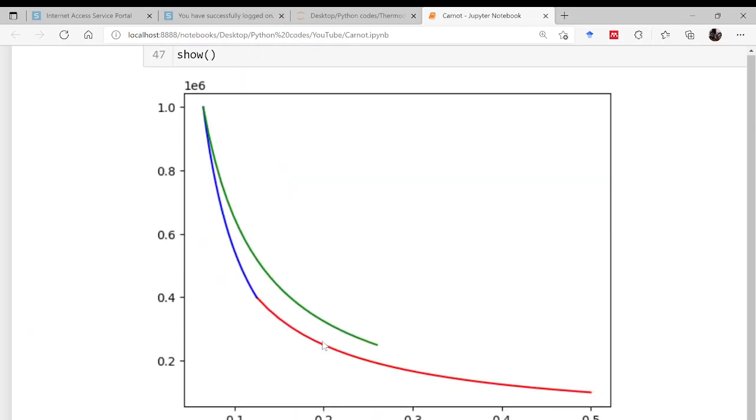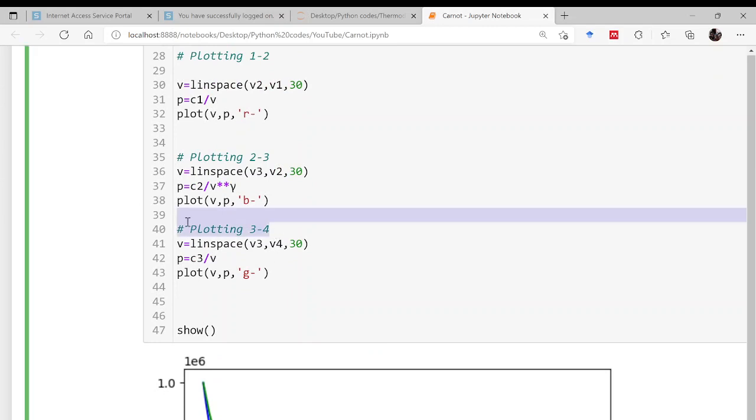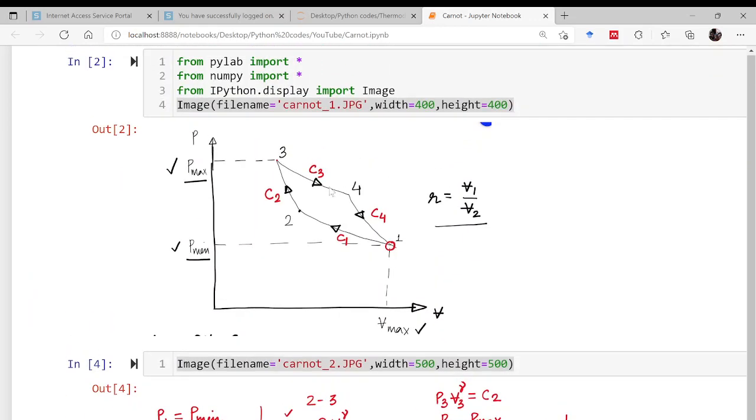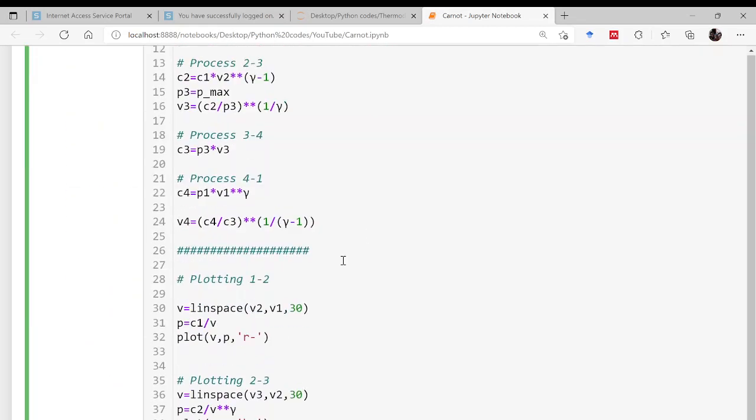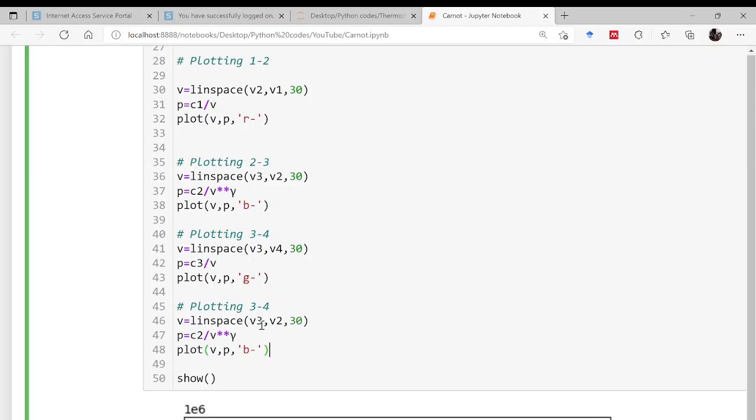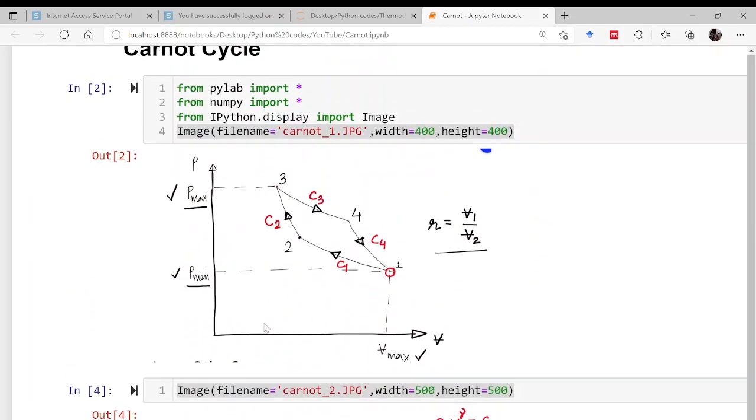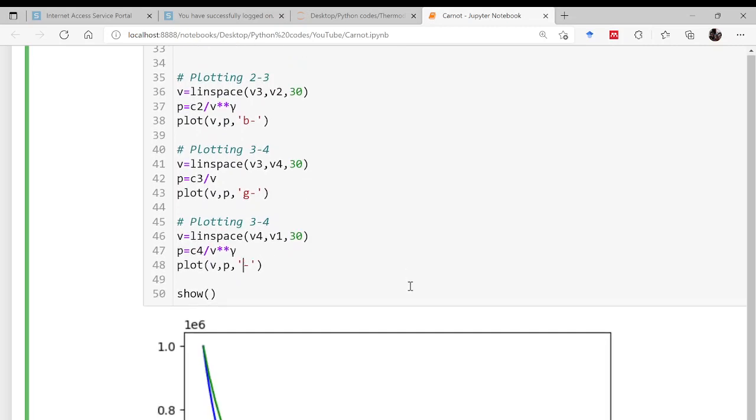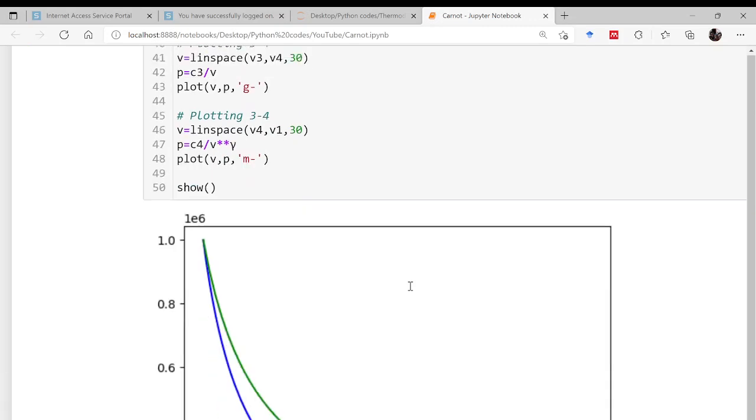This is V1, sorry, 1, 2, 3, and this is point number 4. So now comes the last part, that is a reversible adiabatic process. 4 to 1 is reversible adiabatic process, very much similar to 3 to 2. So why not copy this code? Copying it and then the volume is varying from V4 to V1. Let us say 30 points are there. You have to be very careful. This is C4 here. Let me give the color magenta. Now done.